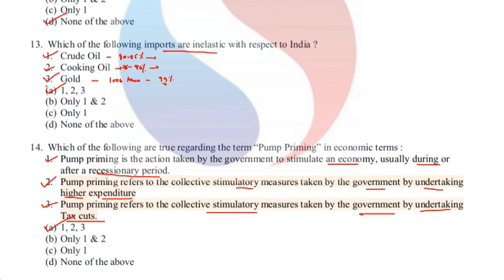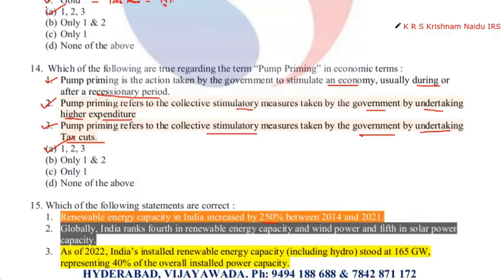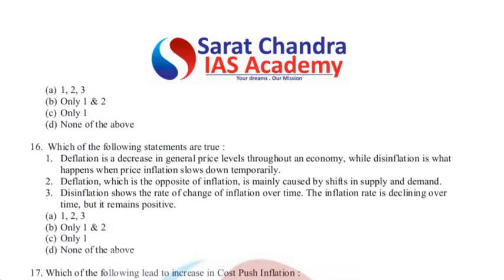Fifteenth question: true statements about renewable energy in India. First — renewable energy capacity increased by 250% between 2014 and 2021 — correct. Second — India ranks fourth globally in renewable energy capacity and wind power, and fifth in solar power capacity — correct. Third — as of 2022, India's installed renewable capacity including hydro stood at 165 gigawatts, representing 40% of overall installed power capacity — also correct. All three are correct; answer is A.